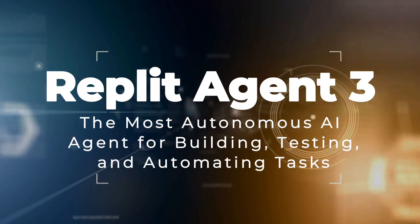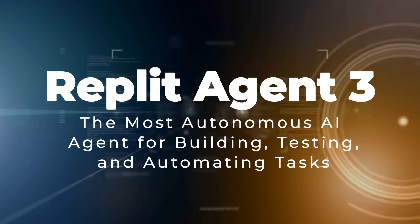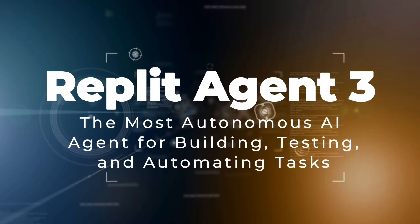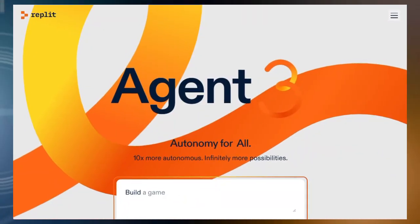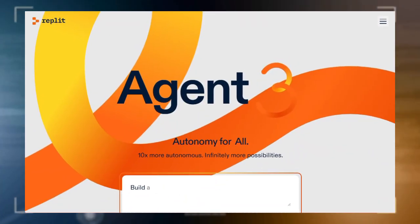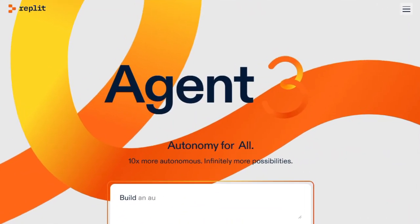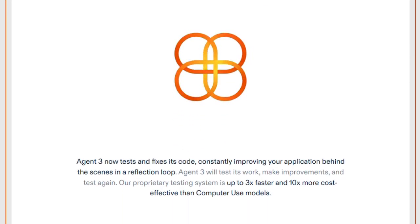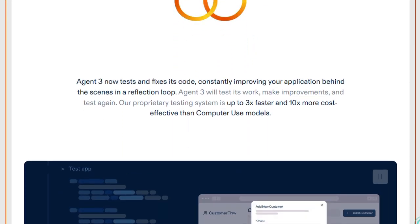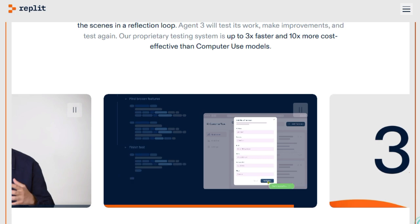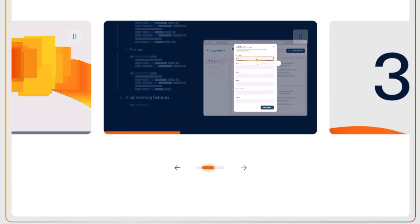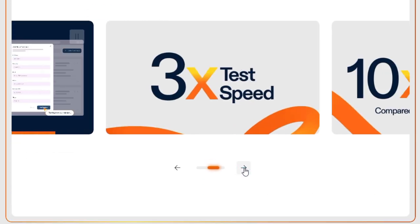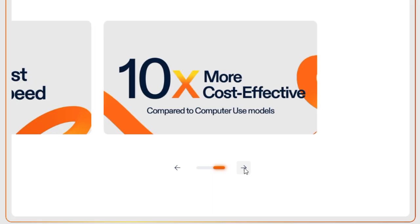Project number two: Replit Agent 3, the most autonomous AI agent for building, testing, and automating tasks. Replit Agent 3 redefines what an AI development assistant can do. What sets it apart is its self-testing and self-fixing cycle, where it continuously tests the apps it builds, clicking through forms, buttons, and API calls in a real browser to catch and fix bugs on the fly. This feedback loop is remarkably efficient, boasting up to 3x faster processing and 10x cost savings compared to traditional approaches.